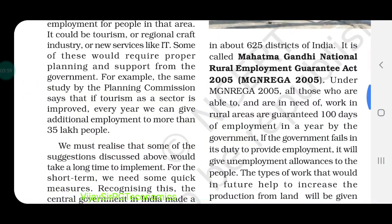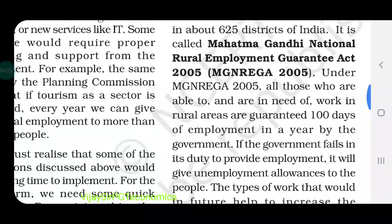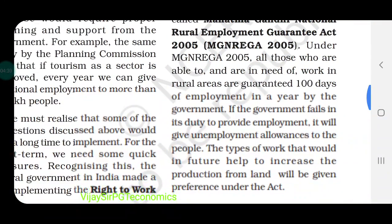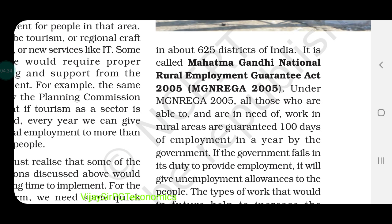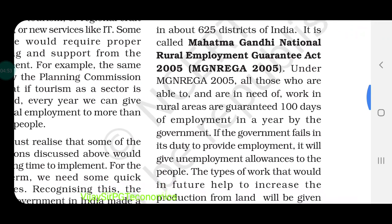One more thing we are going to discuss is the MGNREGA scheme. During the COVID-19 period, the government is providing work to laborers who have migrated from their workplace back to their local places. The scheme is MGNREGA — Mahatma Gandhi National Rural Employment Guarantee Act. This act was established in 2005 as NREGA; MGNREGA was implemented in 2006. The book mentions 2005 — please make a note that MGNREGA was 2006, while NREGA was 2005. NREGA was later renamed to MGNREGA — Mahatma Gandhi.